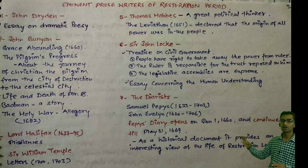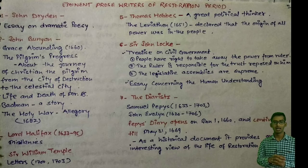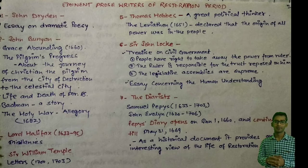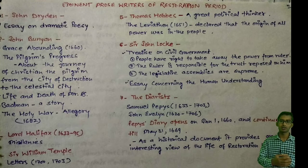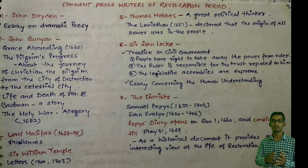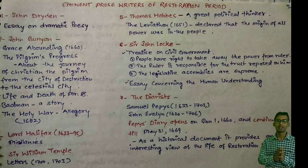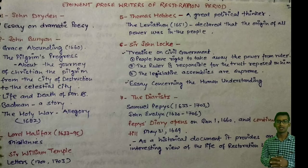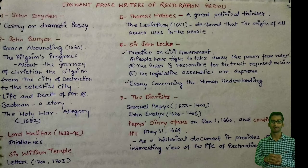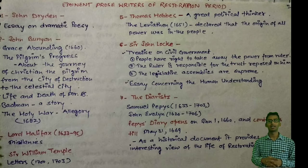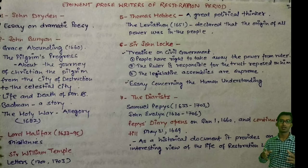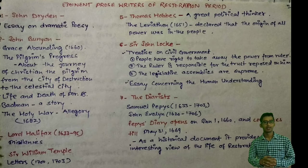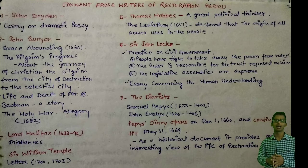Next is Sir John Locke. He wrote Treatises on Civil Government. Key ideas include: the people have the right to take away power from a ruler; the ruler is responsible for the trust reposed in him; and the legislative assembly is supreme. His Essay Concerning Human Understanding is also an important work to discuss, and in some future videos we will talk about these individual works in detail.